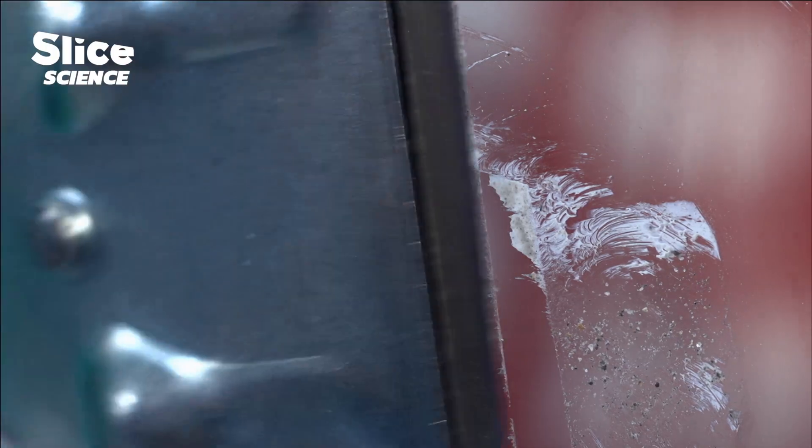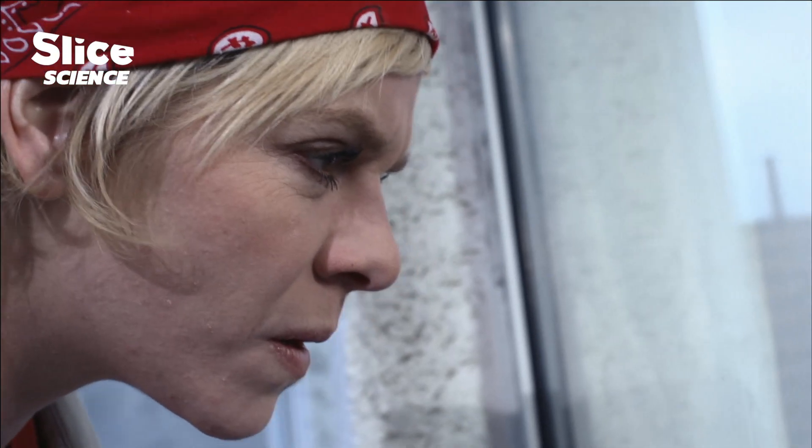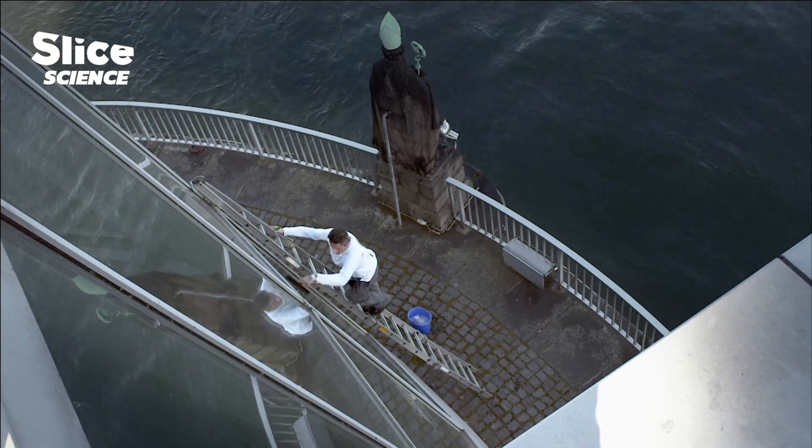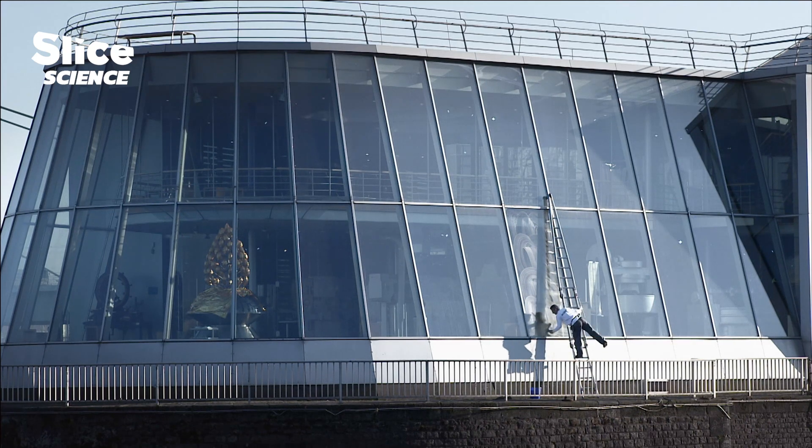Encrusted dirt is best removed using a scraper made for ceramic glass hobs or a special cleaning pad. A professional window cleaner has to do one thing above all else: make good headway. On average, they have to clean thousands of square meters of glass every year.